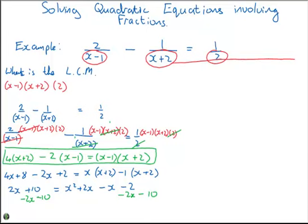What that will do is just leave us with 0 on this side. Now we've got x squared. How many x's have we got? Well, plus 2x minus 2x is 0, minus x is just minus x. Minus 2 minus 10 is minus 12.